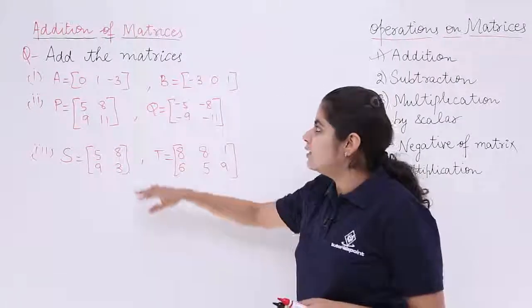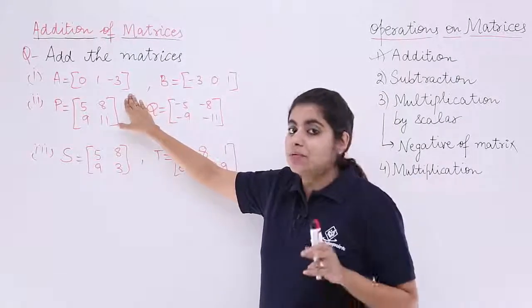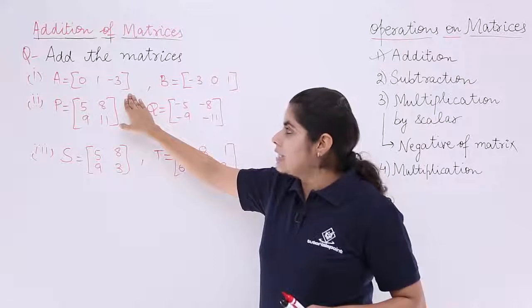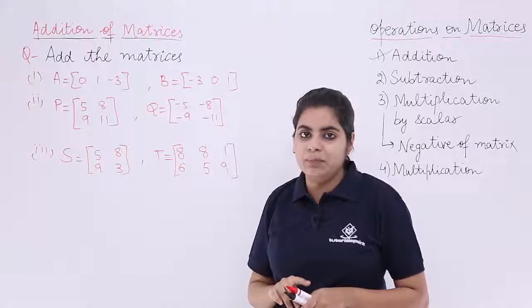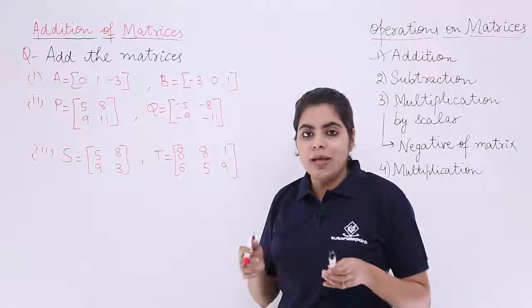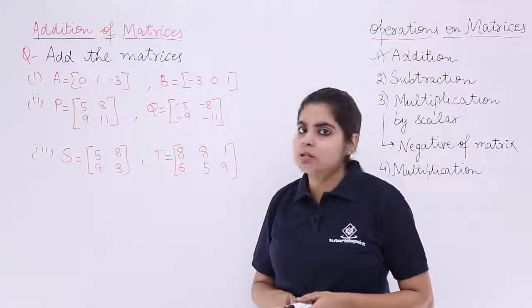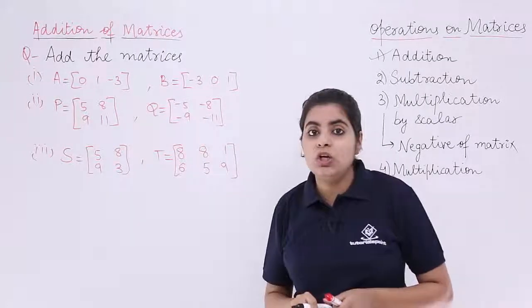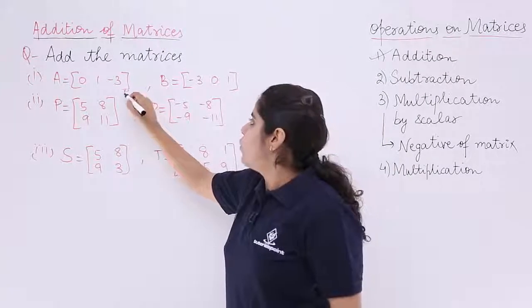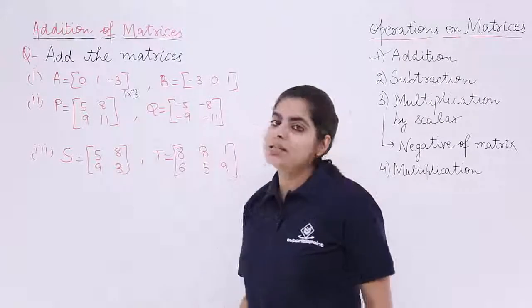Question number one is add the matrices wherein the first part A is given to me as a matrix, B is given to me as another matrix and I am supposed to add them. Checking whether addition is possible or not is also an important task. How many rows? One row. How many columns? Three columns. So, one row, three columns, the order is 1 by 3.